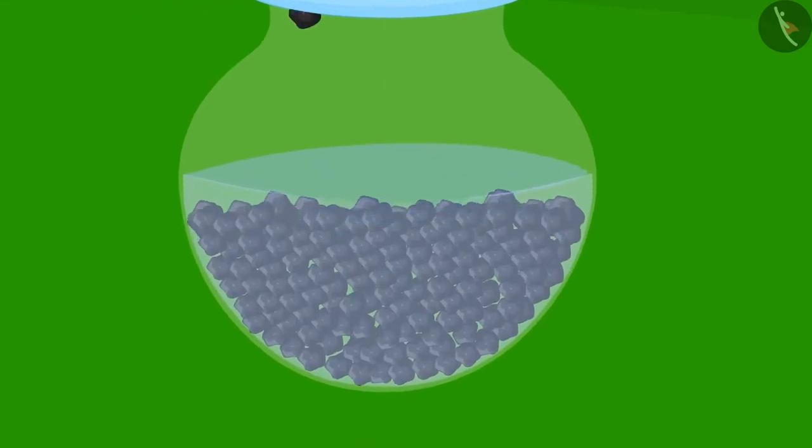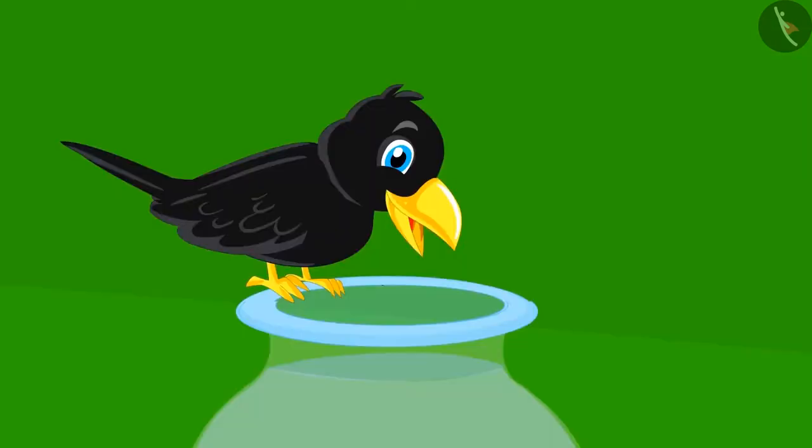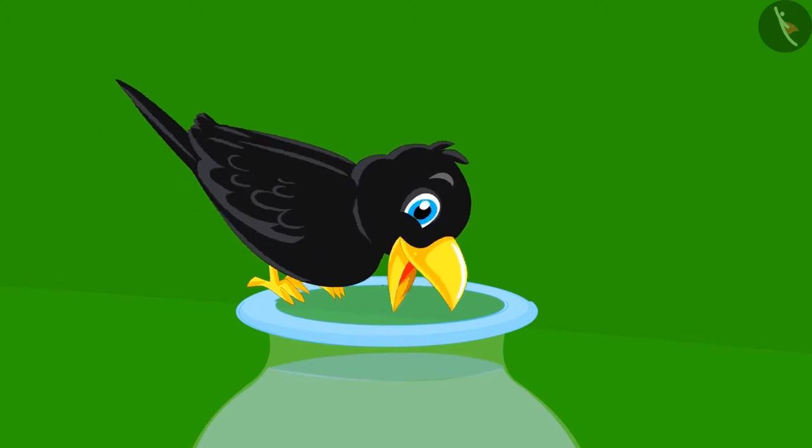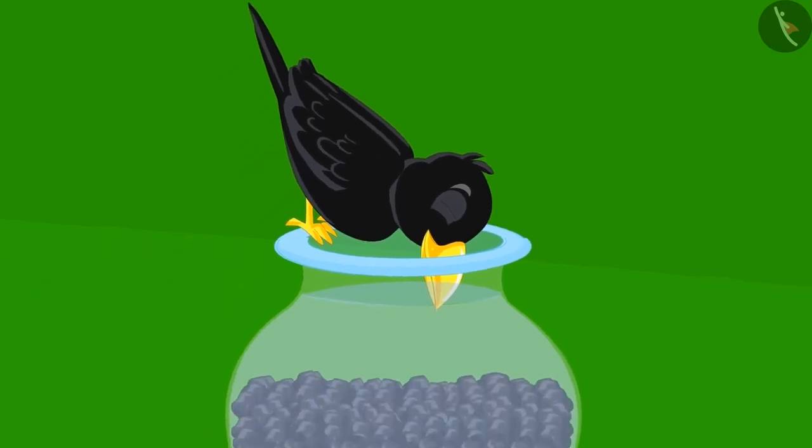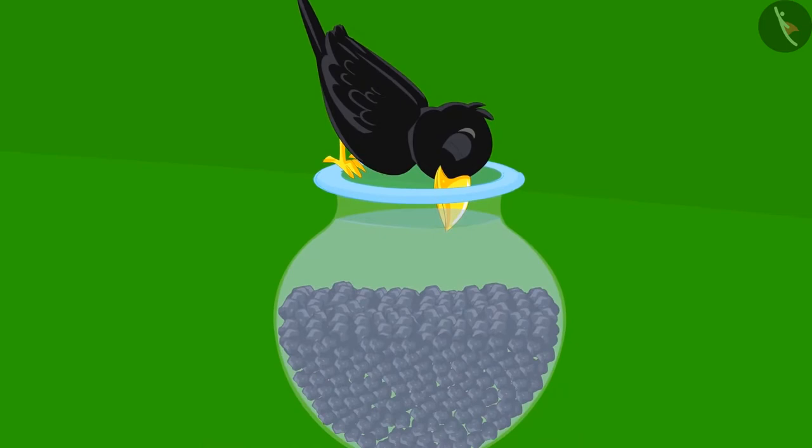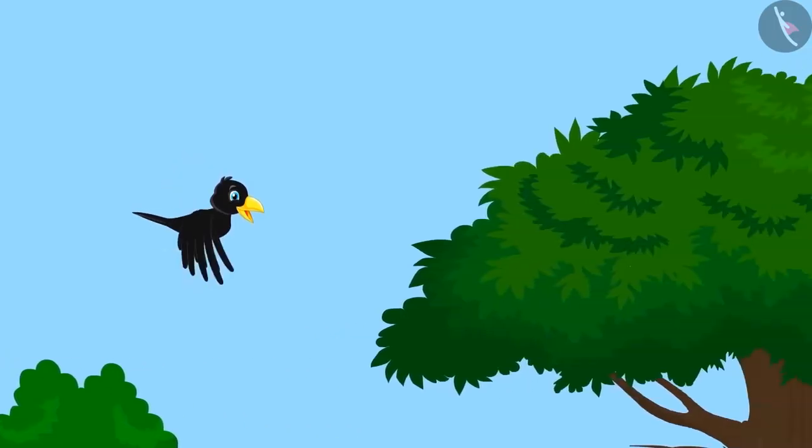The crow put the stones given by Appu into the pitcher. The water level came up. The crow was very happy and dipped his beak into the water and was able to drink the water. He drank water from the pitcher and happily flew away to his house.